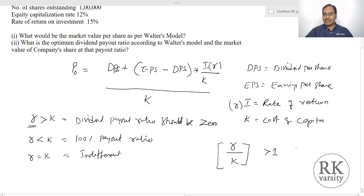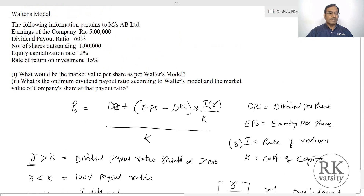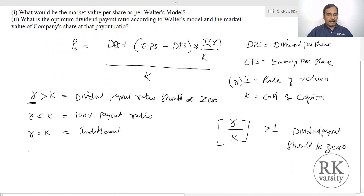Now we see the following information pertaining to a company: earnings of the company = ₹5 lakhs, dividend payout ratio = 60%, number of shares outstanding = 1 lakh, equity capitalization rate k = 12%, and return on investment r = 15%.